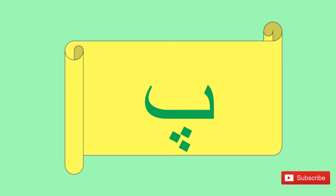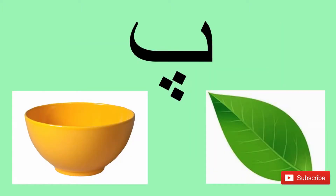آج ہمارا حروف تہجی کا چوتھا حرف ہے۔ چوتھا حرف ہمارے پاس پے ہے۔ پے کے نیچے تین نکتے ہوتے ہیں۔ پے سے پتہ، پے سے پیالا۔ چھوٹے سے تین نکتوں والا پے۔ یہ پے ہے، پے سے پتہ اور پے سے پیالا۔